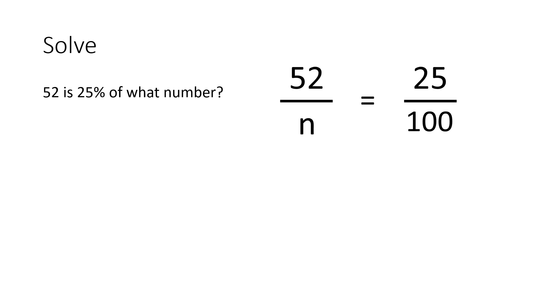We can now solve by multiplying proportionally. And we multiply diagonally wherever we see numbers. In this case, we can multiply diagonally 52 times 100. That will equal 5,200.